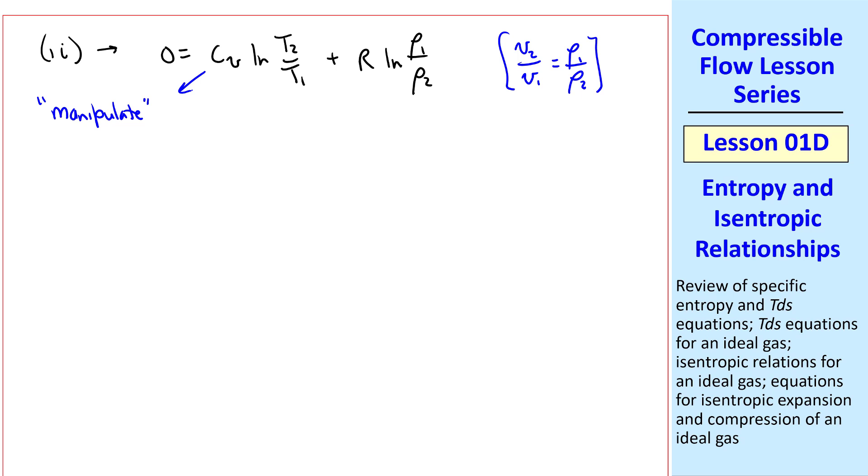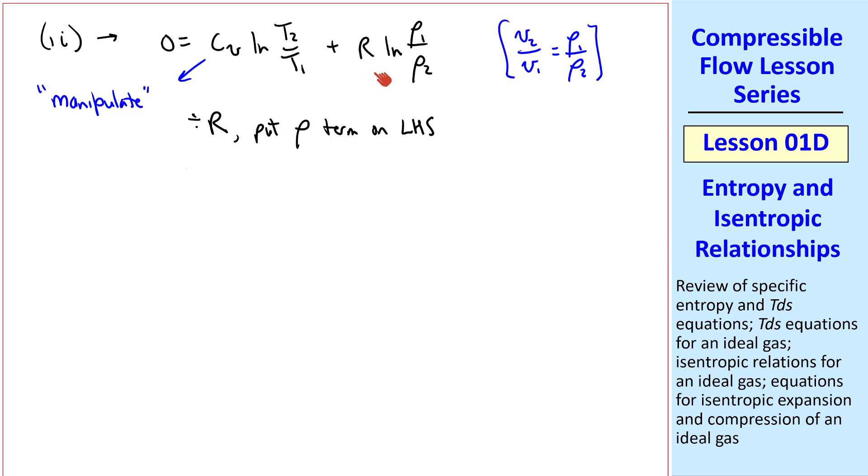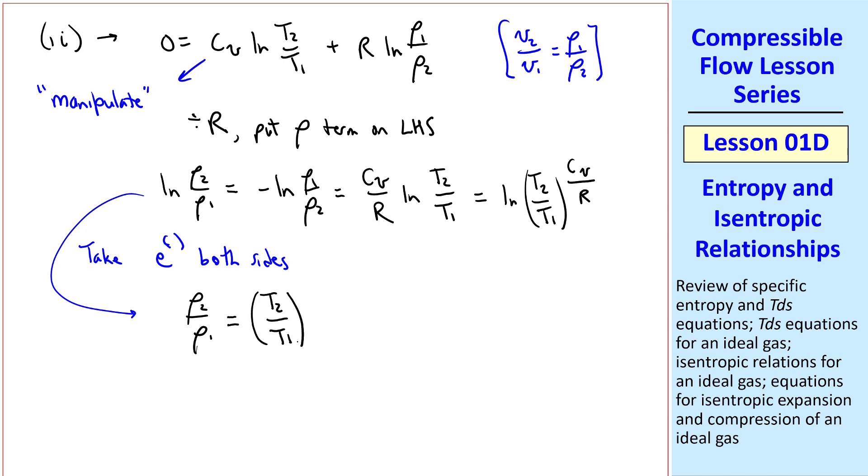Now let's manipulate this equation, which just means let's do some algebra on it. We'll divide by r, and we'll put this rho term over on the left hand side, giving us natural log rho 2 over rho 1, which you may recall is negative natural log of rho 1 over rho 2. And from this term, we have cv over r, natural log t2 over t1. Now take e of both sides of this equation. The left hand side simply becomes rho 2 over rho 1. And if we write this as natural log of t2 over t1 raised to this coefficient, cv over r, we get t2 over t1 to the exponent cv over r.